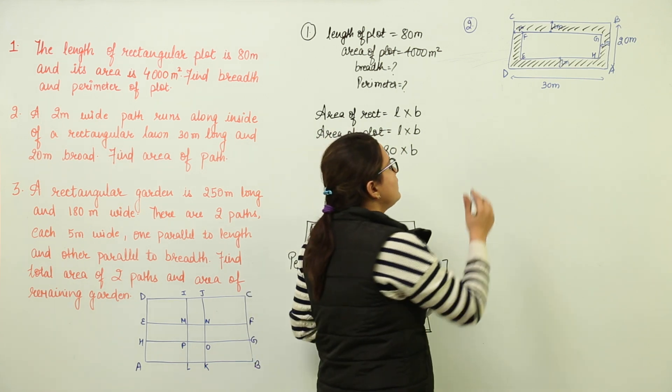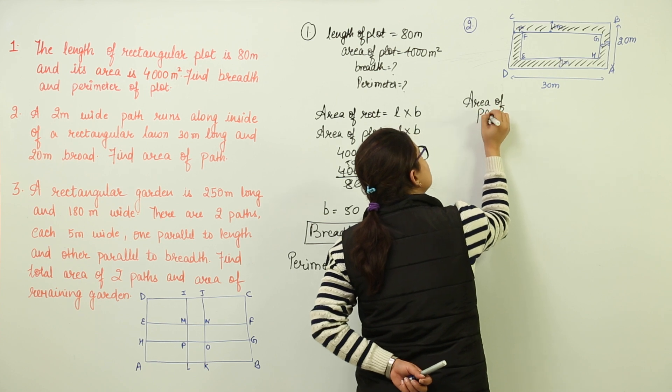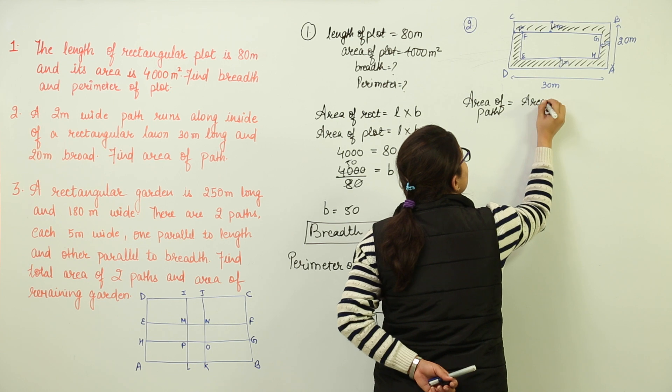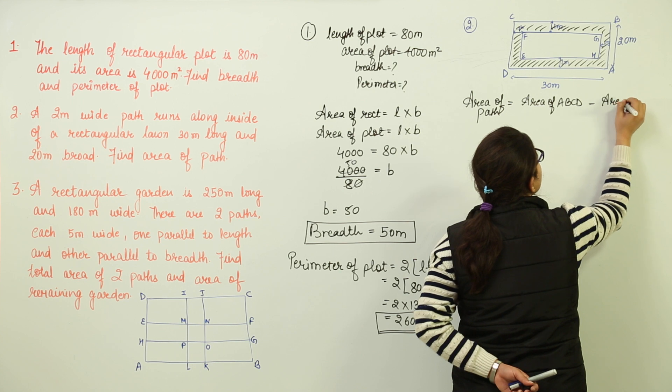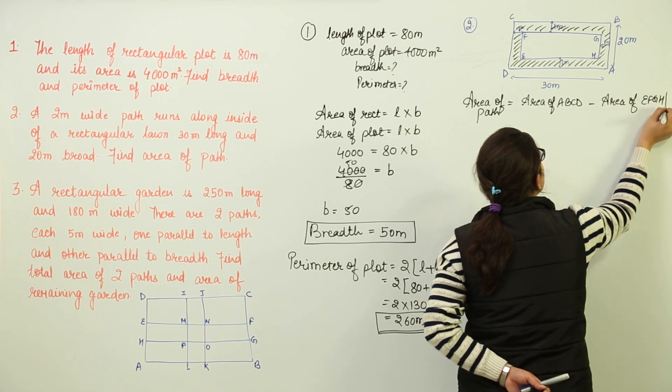Now how are we going to find this out? First of all, I will tell you the equation that you are going to use. The area of path is going to be the subtraction of area of ABCD and area of EFGH. Why is it so? Now I am going to explain it to you.